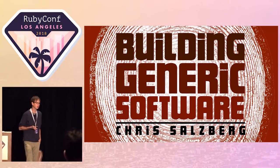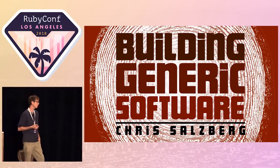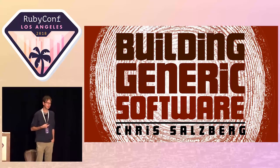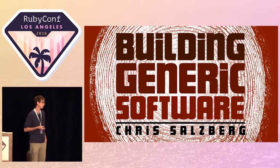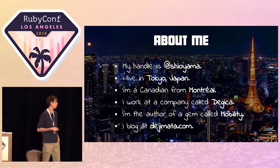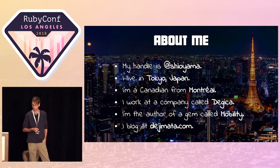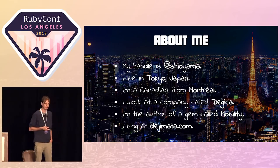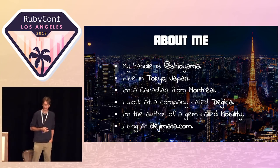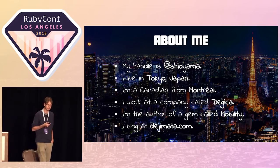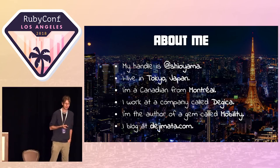Thanks for coming. The title of this talk is Building Generic Software. My name is Chris Salzberg. I've got a lot to talk about, so I'm going to go through some of the easy parts quickly and then the hard parts a bit more slowly. Some quick points about me: my handle is Shioyama, if you've seen that name around. I live in Tokyo, Japan, which you can see in the background of this slide. Don't be fooled — I'm not Japanese. That's my stupid icebreaker joke. I'm a Canadian originally from Montreal.